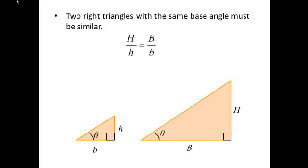Since these two triangles are similar, we can set up the ratio from last time. Big H over little h has to be big B over little b. Now with a little bit of algebra, I can cross multiply and rearrange to get capital H is equal to little h over little b times B.